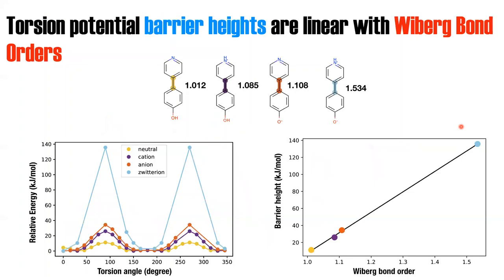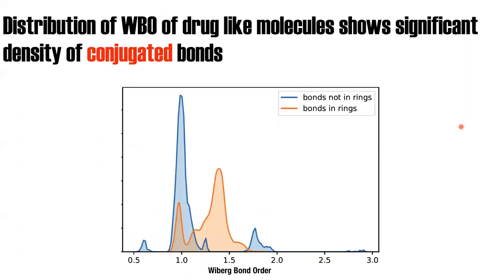The question is how can we use this, and is it general? If it is general, can you extrapolate torsion parameters without having to run all the scans for all the different tautomers? I looked at the distribution of Wiberg bond orders for the FDA-approved molecules in DrugBank, separating bonds in rings from bonds not in rings — since I'm not going to be fragmenting rings. The orange distribution (bonds in rings) shows peaks at 1 and 1.5, which is expected. The blue distribution (bonds not in rings) has a very high peak at 1, and then peaks at 2 and 3. These Wiberg bond orders were calculated using AM1, which tends to slightly underestimate, explaining the shift.